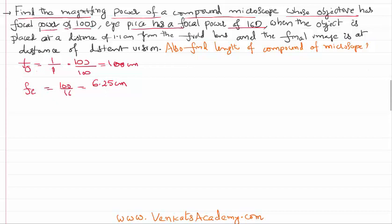In the problem, when the object is placed at a distance of u_o is given for you as 1.1 centimeter, and the final image is formed at least distance of distant vision. The final image of the eyepiece is given as least distance of distant vision for a human eye, which is 25 centimeters.